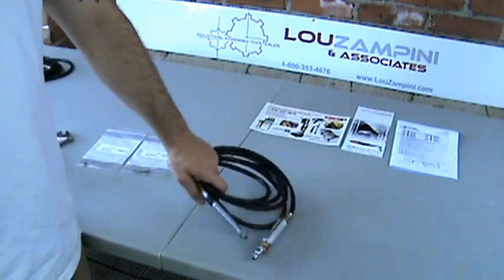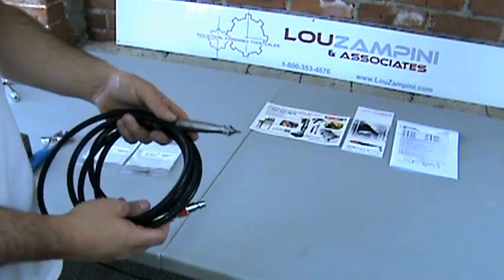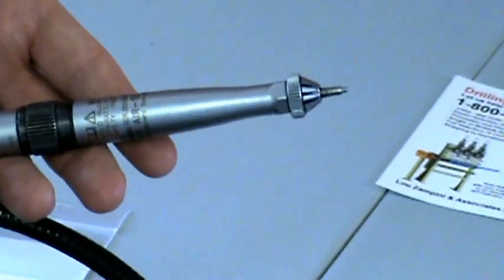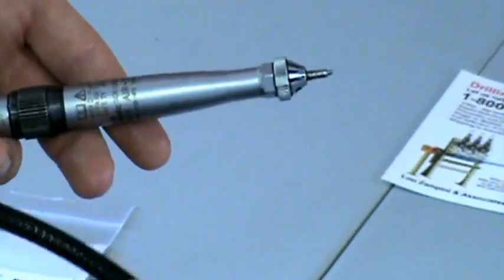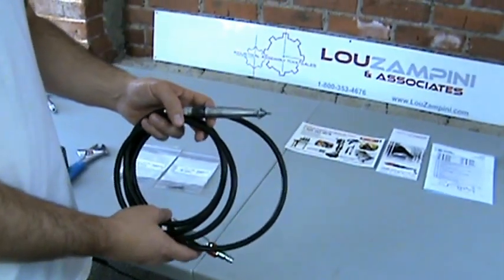In this video we're going to show you how to change the stylus or the tip on a standard Chicago Pneumatic CP9361 like the one I have in my hand here. This is one of the most popular air scribe engraving pens available today.